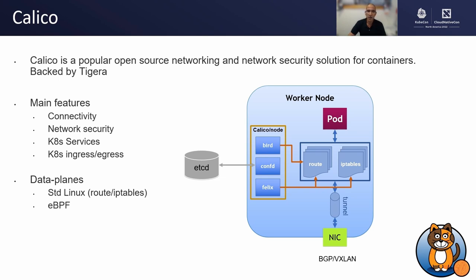In addition, Calico has two data path implementations: standard Linux, which uses Linux routes and IP tables, and eBPF, which is extended Berkeley Packet Filters. For our talk, we use the standard Linux option.